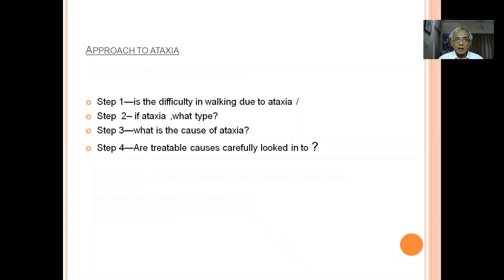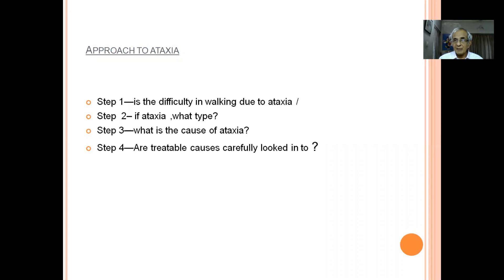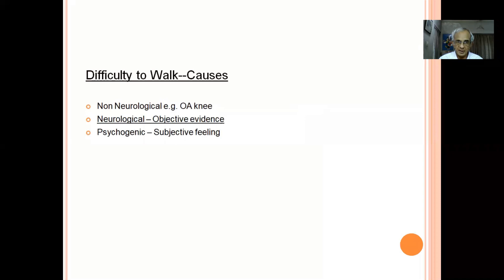When approaching ataxia: first, when the patient comes with difficulty in walking, confirm it is due to ataxia. Once you confirm it is ataxia, find out what type. Once you know the type, go to the cause and look for treatable conditions. First, look for non-neurological causes — not infrequently, patients with osteoarthritis come saying they cannot walk. Always confirm objective neurological evidence.